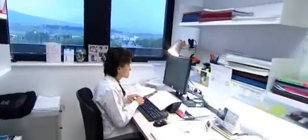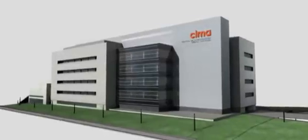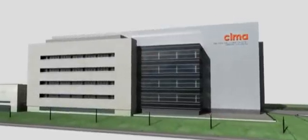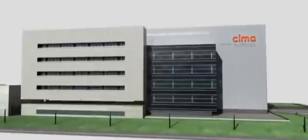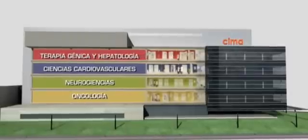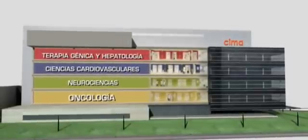Around 400 professionals from over 20 countries in Europe, Africa, Asia and America work in the Center for Applied Medical Research, in collaboration with other international centers worldwide. The interdisciplinary work carried out by the scientists is organized into four priority research divisions: Gene Therapy and Hepatology, Cardiovascular Sciences, Neurosciences and Oncology.